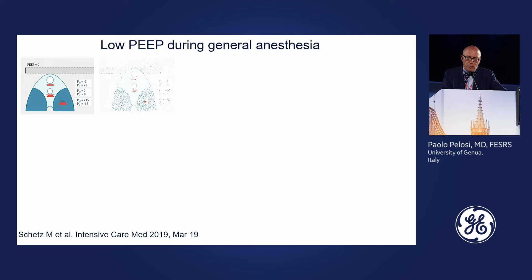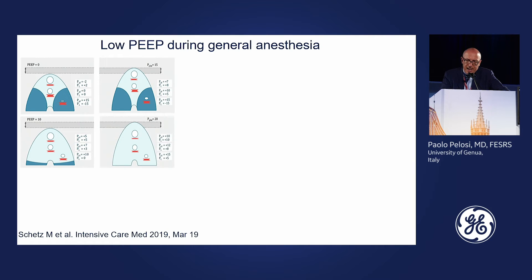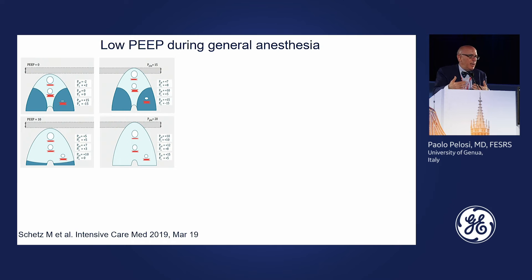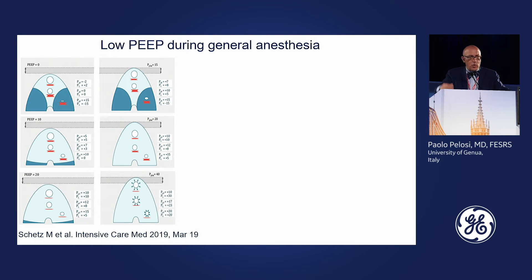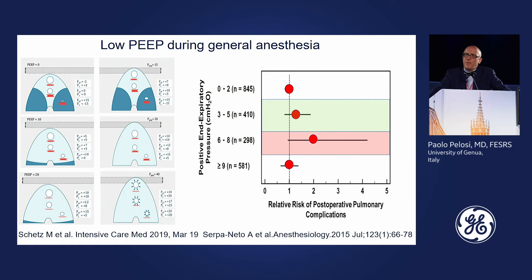With low PEEP during general anesthesia, we have more atelectasis, more shunt, and this may be associated with reduced oxygenation. If we apply some PEEP, we recruit the lung, but we must be cautious not to exceed inspiratory pressures of 20 to 25 cmH2O maximum, especially during laparoscopy or in morbidly obese patients. We recommend starting at 5 cmH2O of PEEP in most patients.